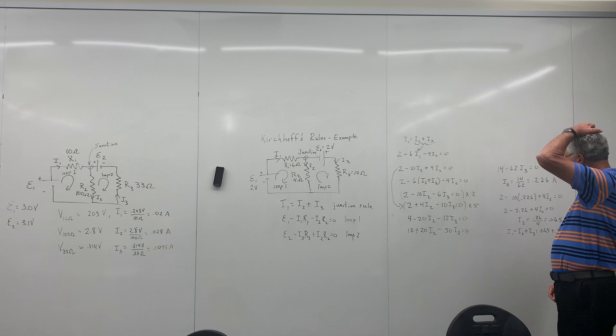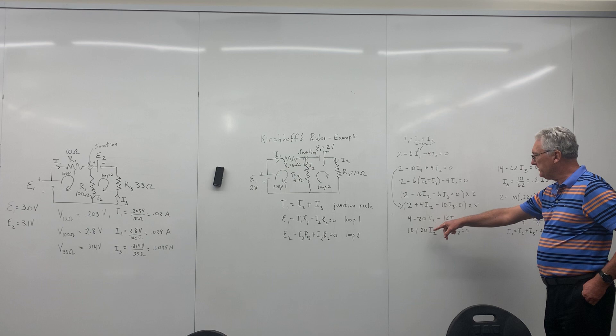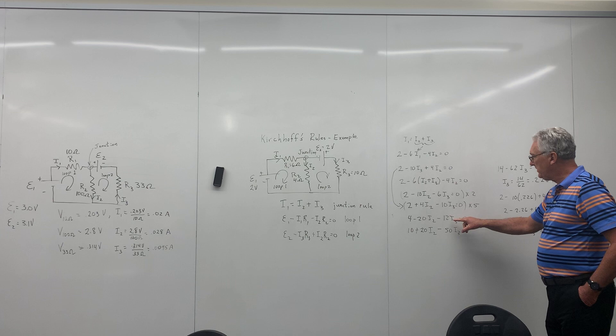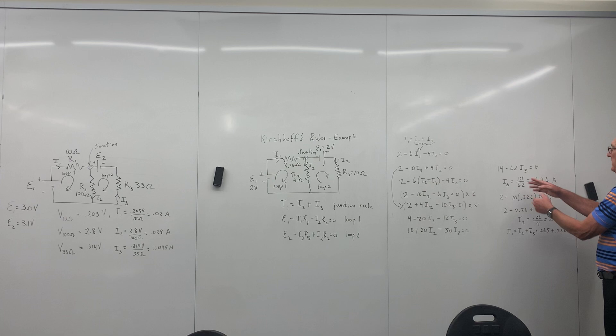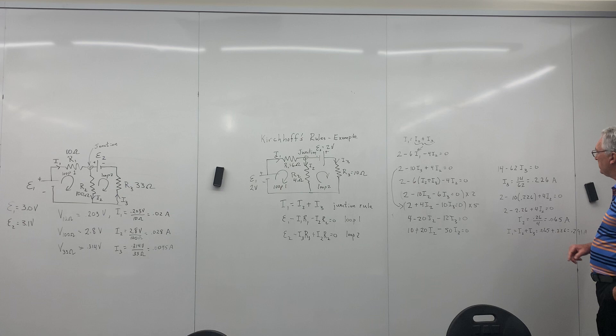And then I just solve for I3 because the I2s go away. So add these two equations together. You get 14, no I2s, minus 62I3 equals zero. 14 minus 62I3 equals zero. I take the 62I3 to the other side, divide by 62, and you get I3 equals 14 over 62. And so the current for I3 is 0.226.